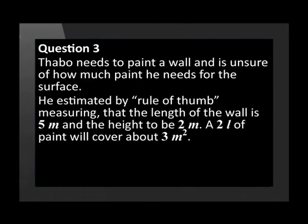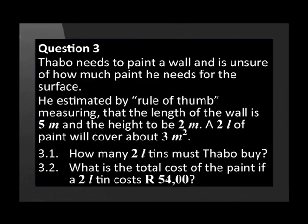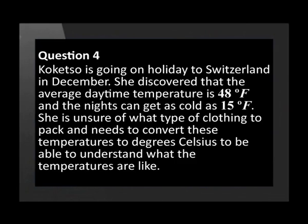Question three involves an estimation of area together with a costing calculation. Tabo needs to paint a wall and is unsure of how much paint he needs. He estimated the length of the wall is 5 meters and the height to be 2 meters. A 2-litre tin of paint will cover about 3 square meters. How many 2-litre tins must Tabo buy, and what is the cost if a 2-litre tin costs 54 rand?